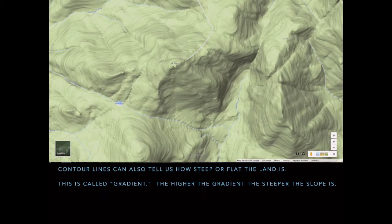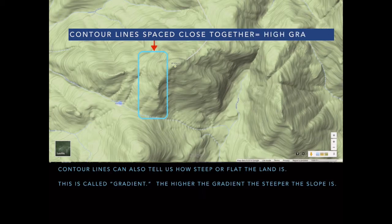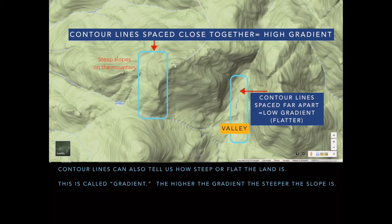The great thing about contour lines is that they can also tell us how steep or flat the land is — they tell us elevations but also slope. This is called gradient: the higher the gradient, the steeper the slope. The Adirondacks are a great place to go skiing because of these wonderful steep slopes. Contour lines spaced close together indicate high gradient or steep slope, while contour lines spaced farther apart indicate a flat area like a valley.